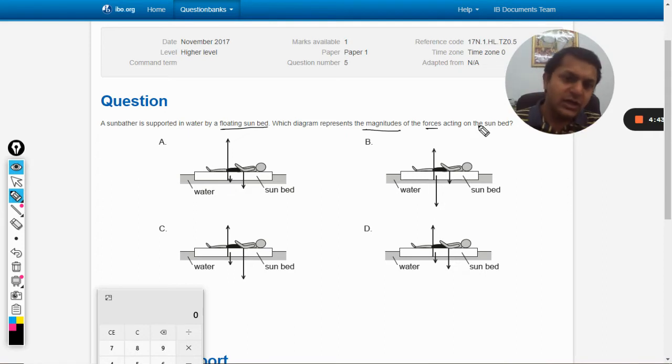Without jumping into the options, first of all we will try to create our own diagram and then we will compare them. So first of all there will be this bed, and the bed will be having its own weight, and there is a person who is lying here.